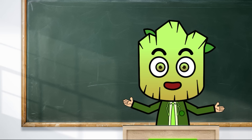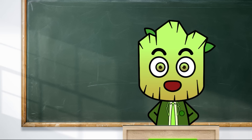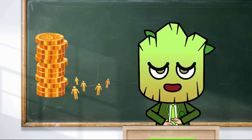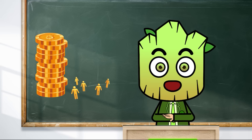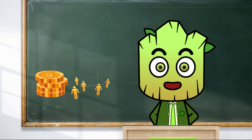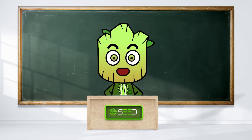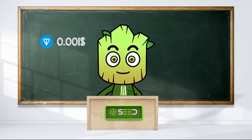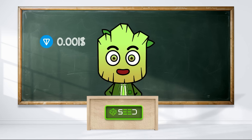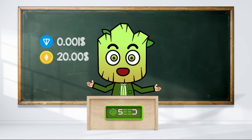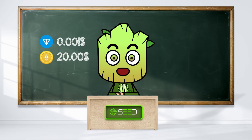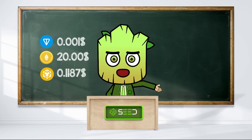Another significant advantage is the low transaction fees. TON's users can enjoy fast transactions at a fraction of the cost, making the network accessible to a broader audience. TON's average fee is around $0.01, while in contrast, Ethereum's fees can be much higher, averaging around $20 in July 2024, and Binance Smart Chain's average fee is around $0.10.